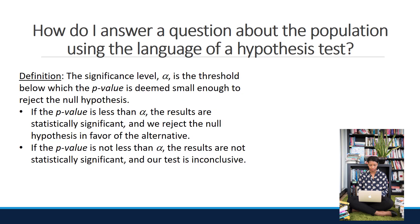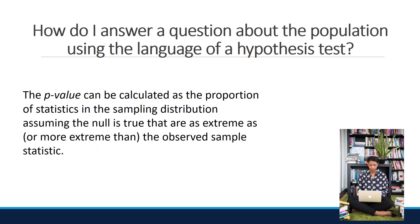Definition: The significance level alpha is the threshold below which the p-value is deemed small enough to reject the null. If the p-value is less than alpha, the results are statistically significant and we reject the null hypothesis in favor of the alternative. If the p-value is not less than alpha, the results are not statistically significant and our test is inconclusive. Often, alpha will equal 0.05 by default unless otherwise specified, and many publications use alpha equal to 0.05. The p-value can be calculated as the proportion of statistics in the sampling distribution — assuming the null is true — that are as extreme or more extreme than the observed sample statistic. The smaller the p-value, the stronger the evidence against the null in favor of the alternative.